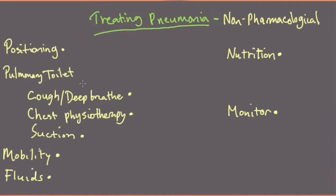On top of the pharmacological approaches, there's a whole host of non-pharmacological interventions that are important for treating pneumonia. Most of these are things that nursing can initiate and maintain. First, positioning: in the acute phase of pneumonia, when the patient is really having a hard time breathing, you want to position for comfort and allow them to assume whatever position gives them the most ease of breathing.